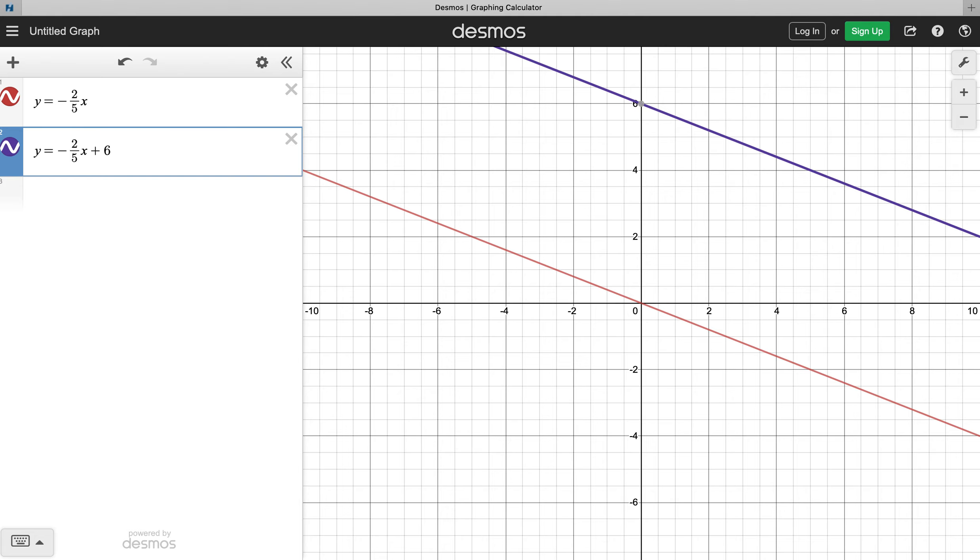Okay? They have the same rate of change. In this case, they both go down 2 and over 5, down 2 and over 5, down 2 and over 5. And again, proving that they're parallel is showing me that they have the same slope.